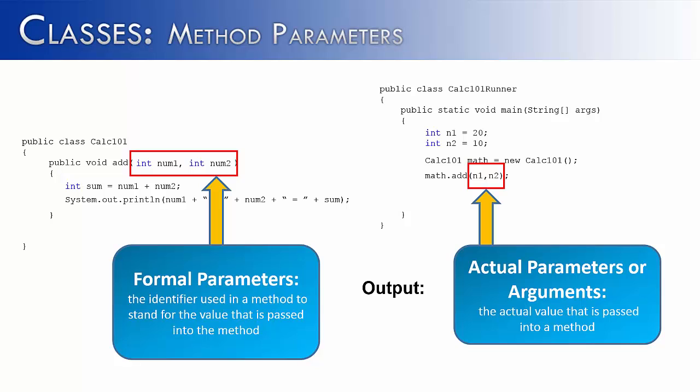Actual parameters are the values that are being passed to the formal parameters. So when this runs, the actual values 20 and 10 would be passed over to the formal parameters num1 and num2. They would be added together, and they would print out the result.